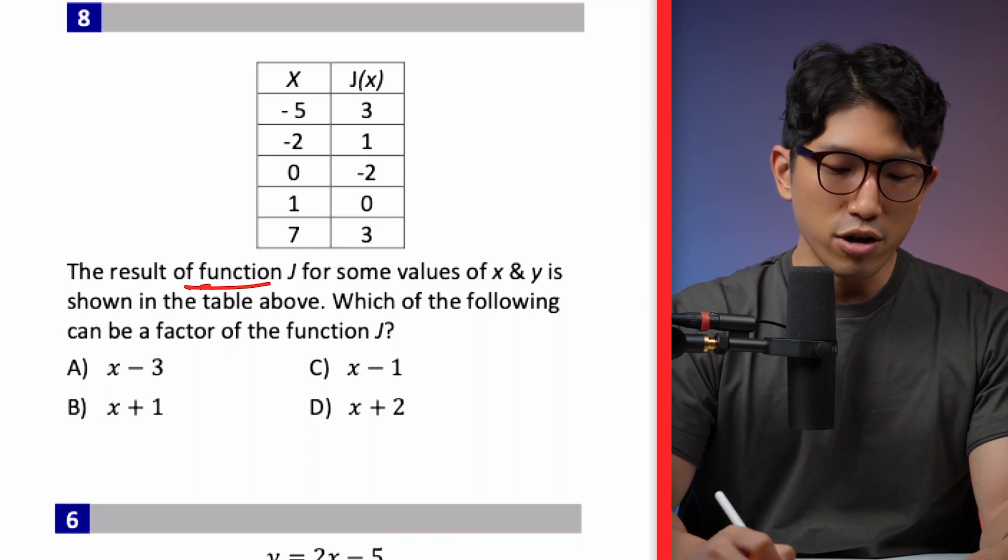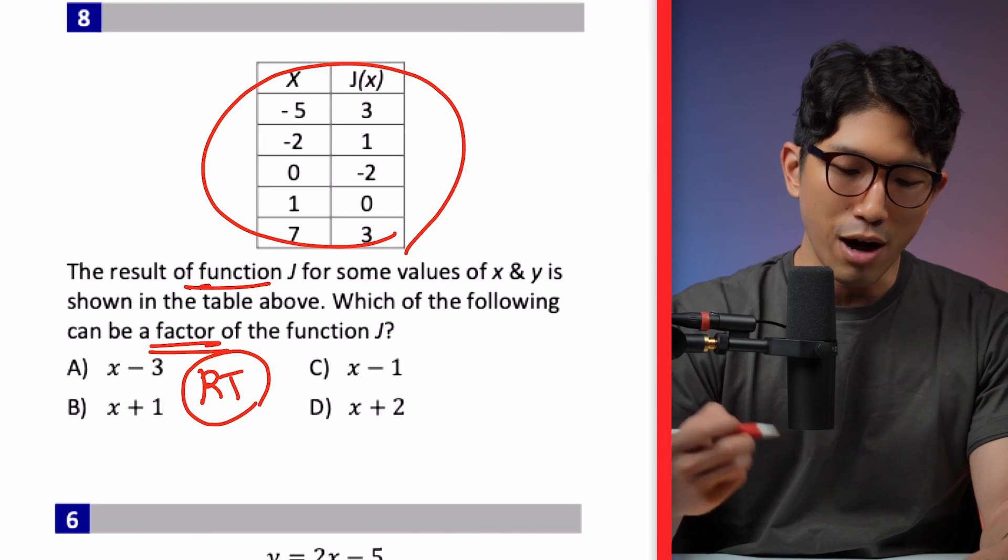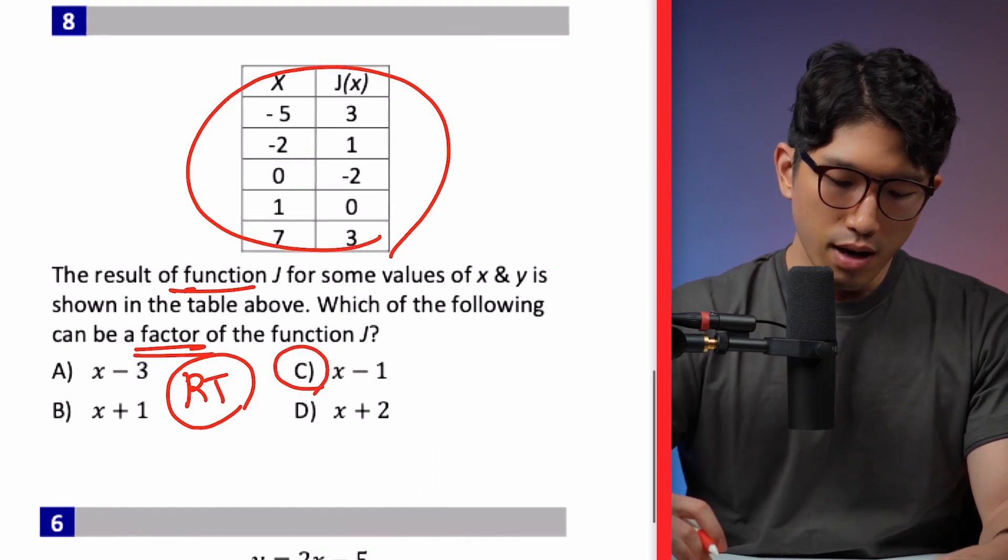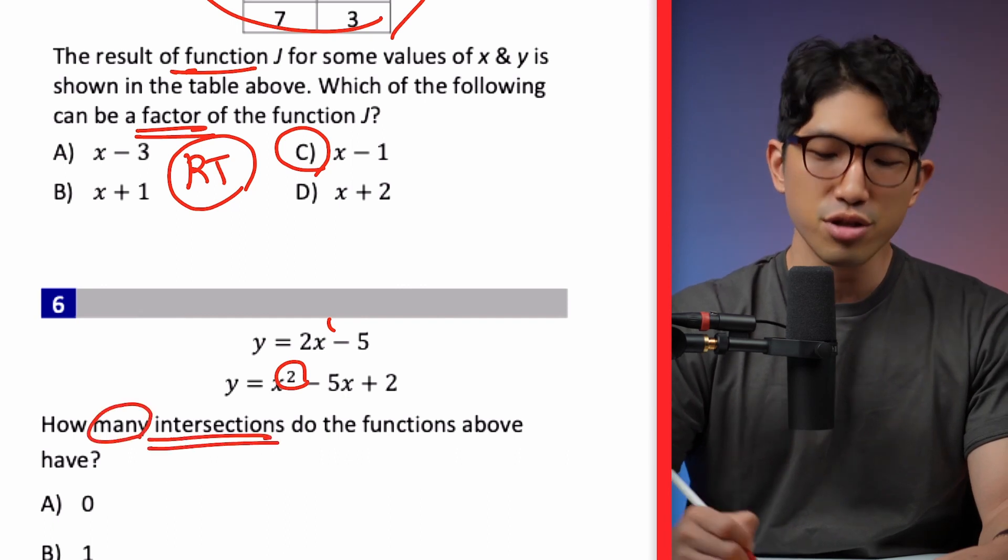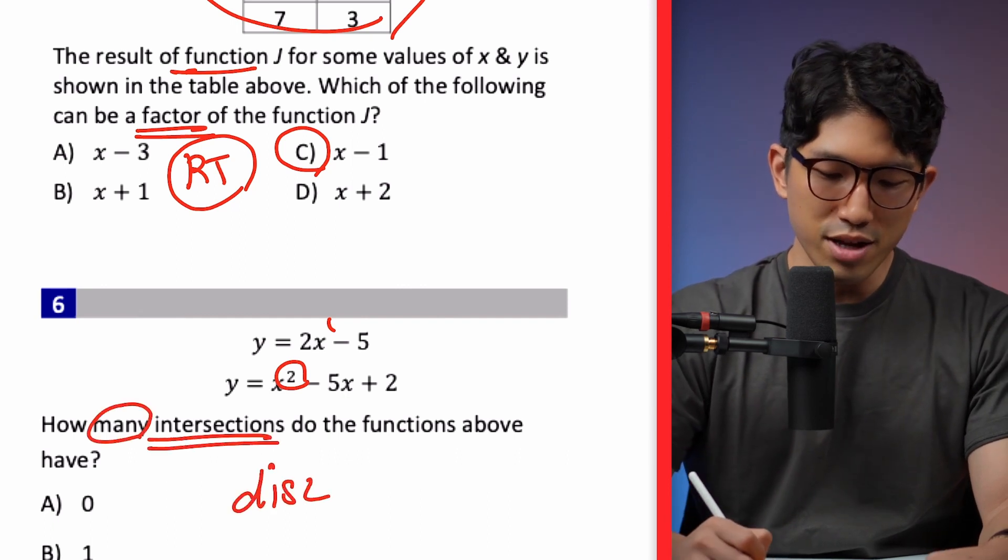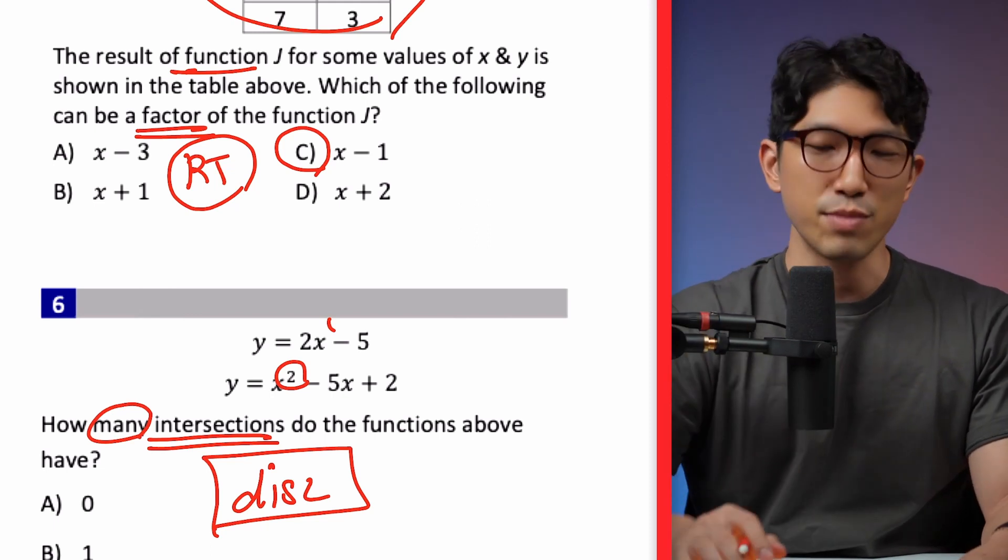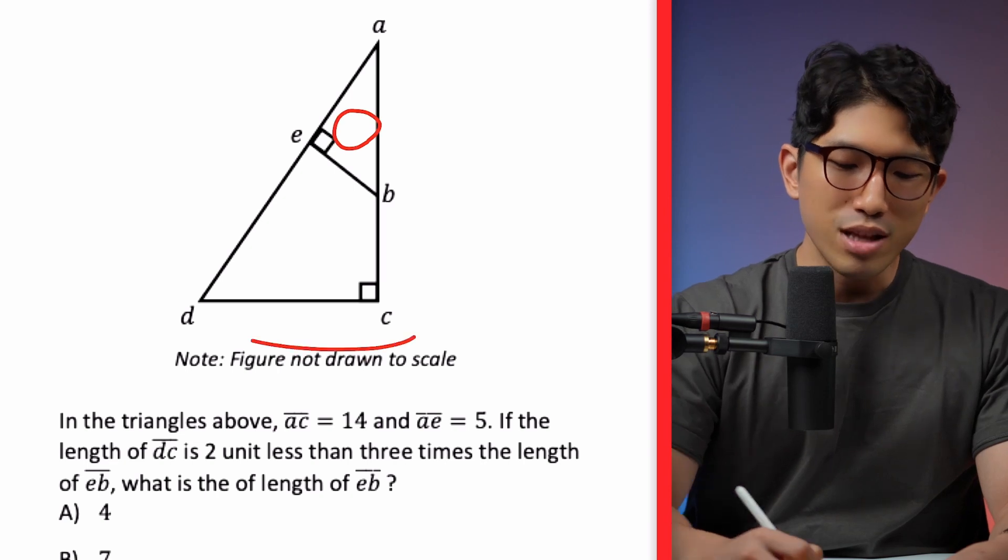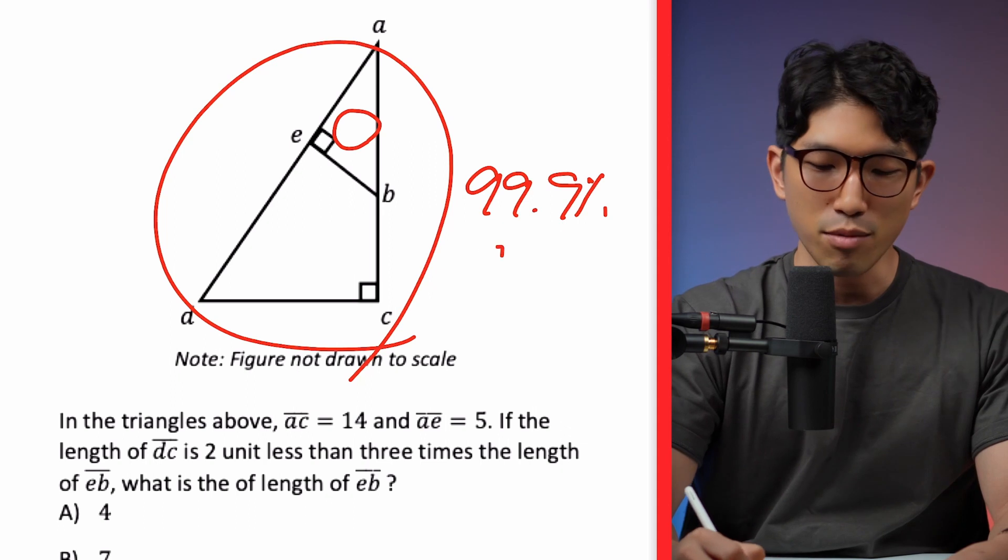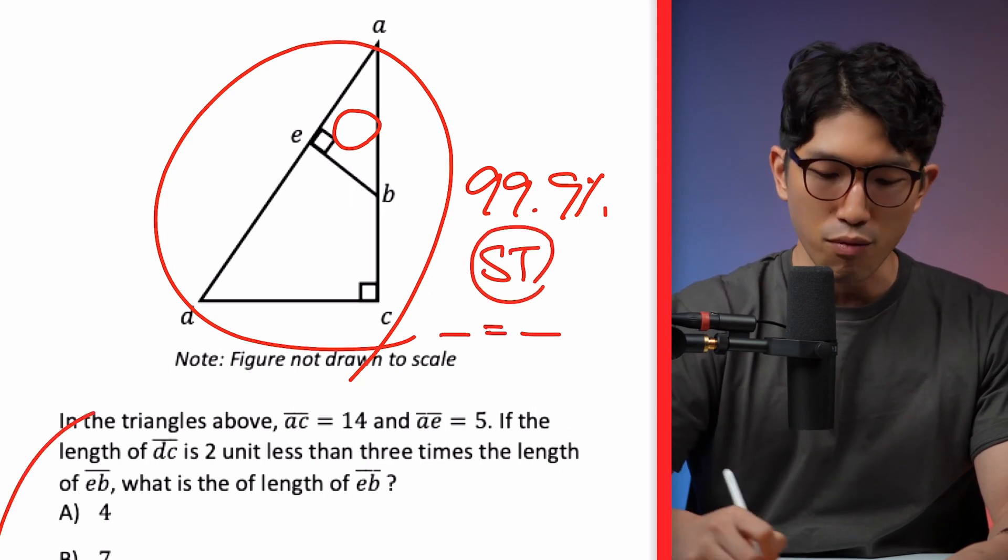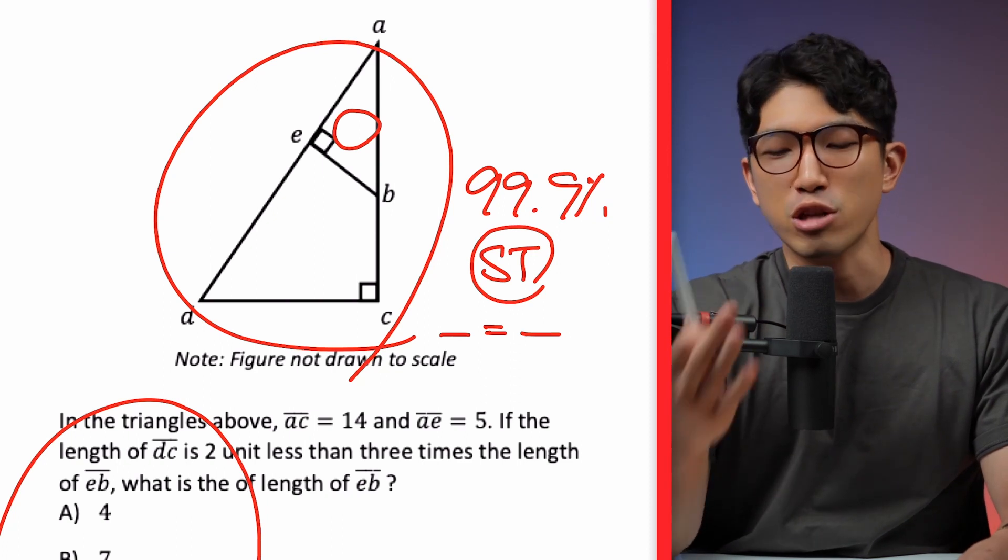Let me show you. So for example, if you see a function with a table and the question is talking about factor, then this question is testing you on remainder theorem. The answer is going to be choice C. If the question is giving you a line and a parabola and it's asking for the number of intersections, you just need to use what's known as discriminant and find the answer. So you don't even have to think about anything. You see the question, you go into discriminants. And also when you see a triangle within another triangle, chances are there's like a 99.9% chance that is testing you on similar triangles and you just need to set up the proportions and get the correct answer. And these are just tip of the icebergs and there are just so many patterns that you just need to be familiar with.